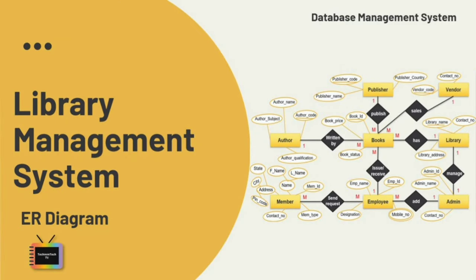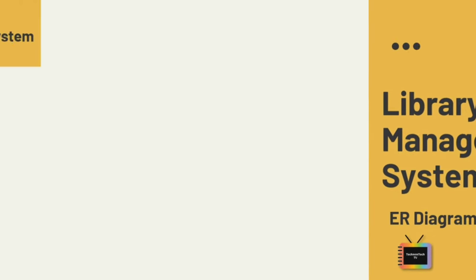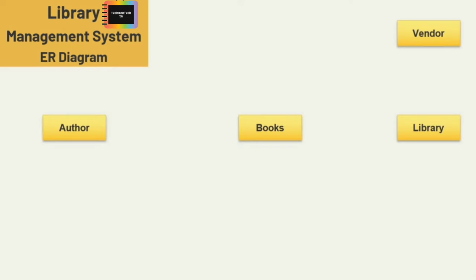Hi everyone, welcome back to Technon Tech TV. In this tutorial I will show you how to draw an ER diagram for a library management system. If you don't know what an ER diagram is and what its components are, I have added the video link in the upper right corner of your screen, so watch that video first. An ER diagram for a library management system is a graphical representation of database tables and relationships between library member, book, admin, etc. The main entities of this ER diagram are library, books, author, vendor, publisher, admin, employee.